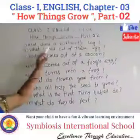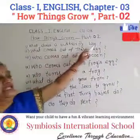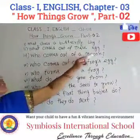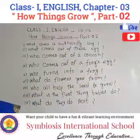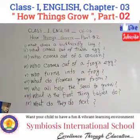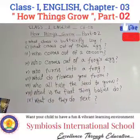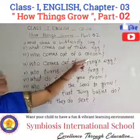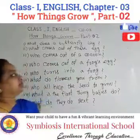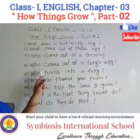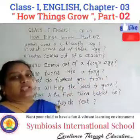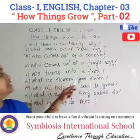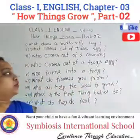What does a butterfly lay? Eggs. What comes out of these eggs? Caterpillar. Who comes out of a cocoon? Butterfly. Who comes out of a frog's egg? Tadpole. Who turns into a frog? Tadpole.